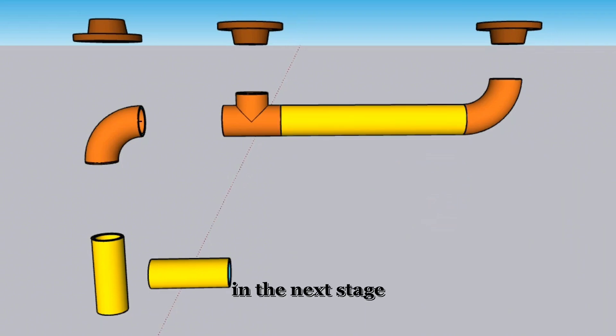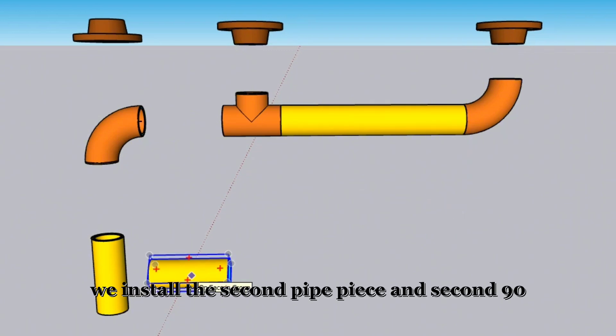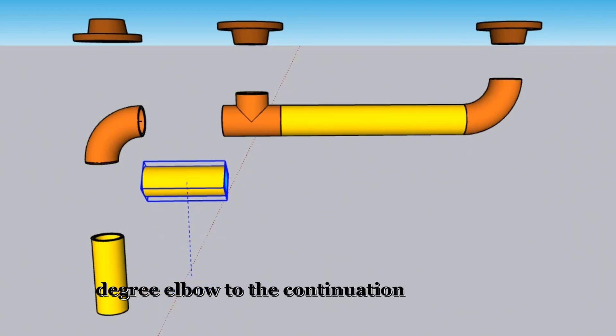In the next stage, we install the second pipe piece and second 90-degree elbow to the continuation of the pipe tee.